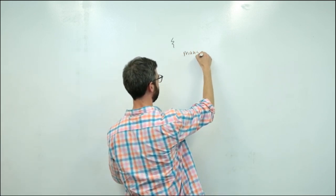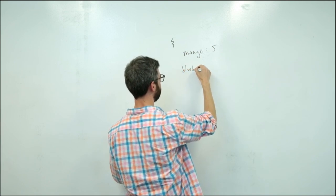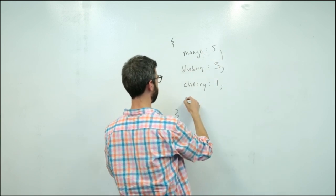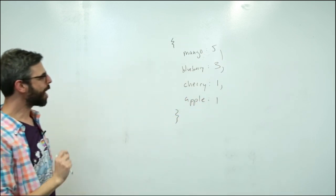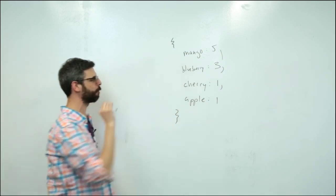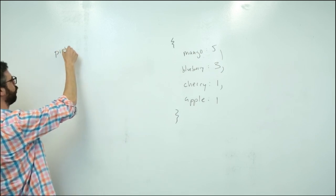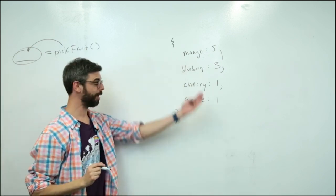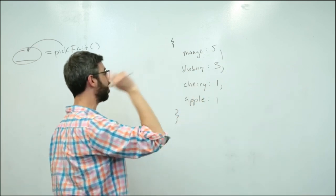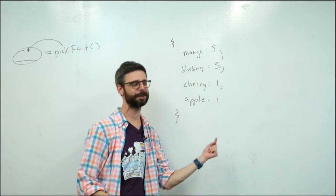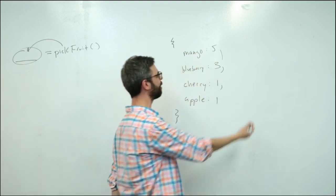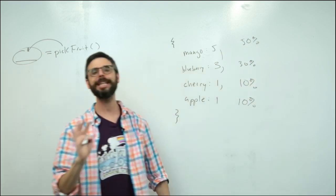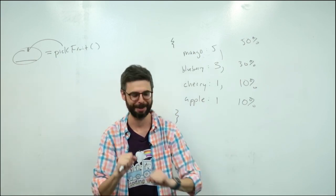It's going to have things in it like mango: 5, blueberry: 3, cherry: 1, and apple: 1. What I want is a function called 'pick fruit' — when I call that function I get back a particular fruit, maybe mango, maybe blueberry, maybe cherry, maybe apple. I want to get mango five times as often as apple. I wrote these numbers to add up to 10, so mango 50% of the time, blueberry 30%, cherry 10%, apple 10%. This relates to so many different kinds of scenarios in computer programming.